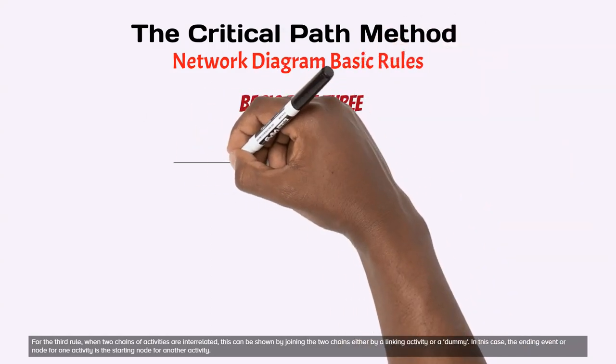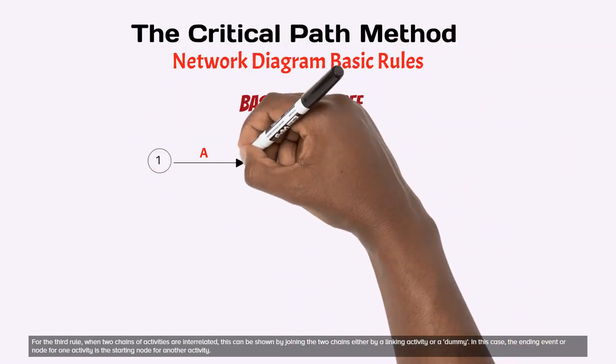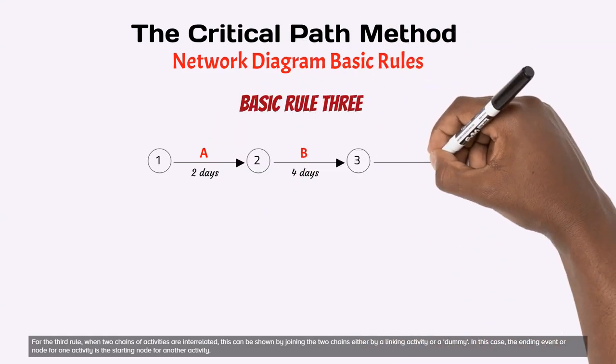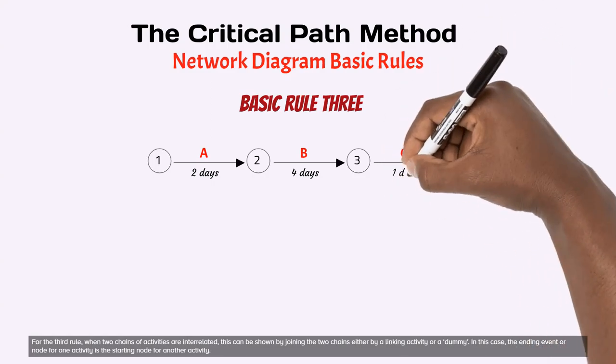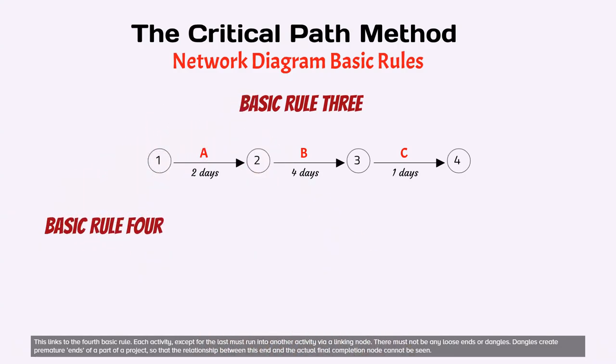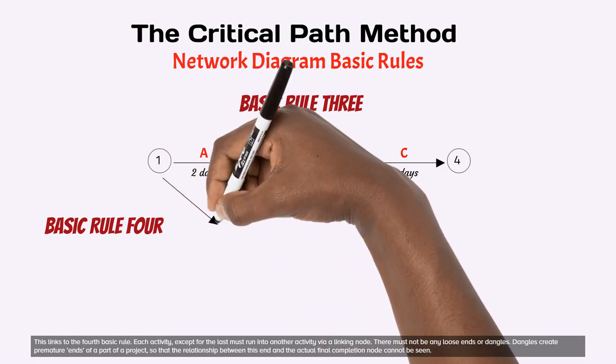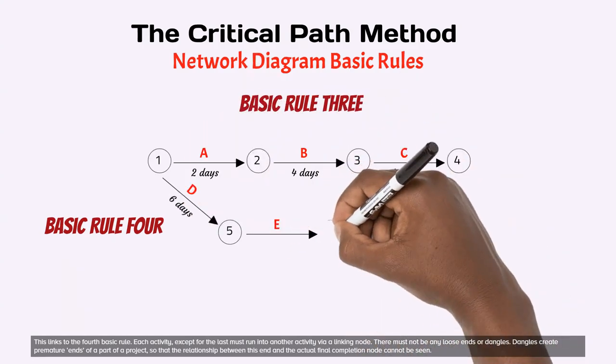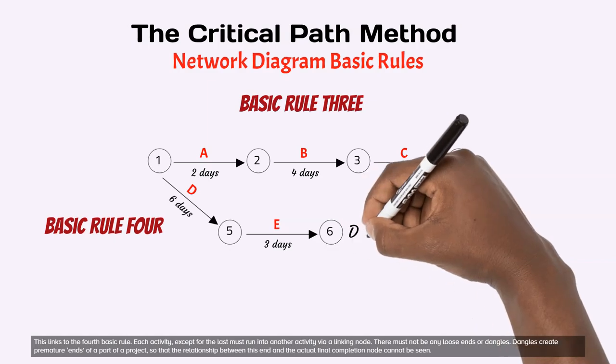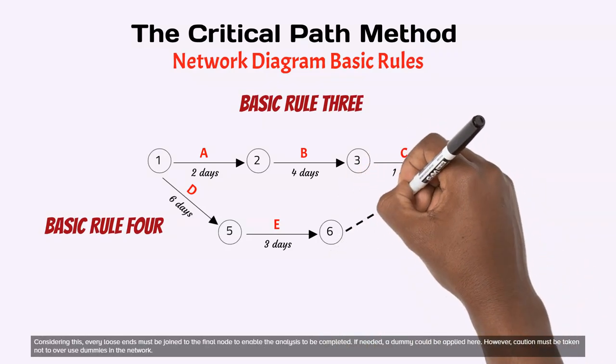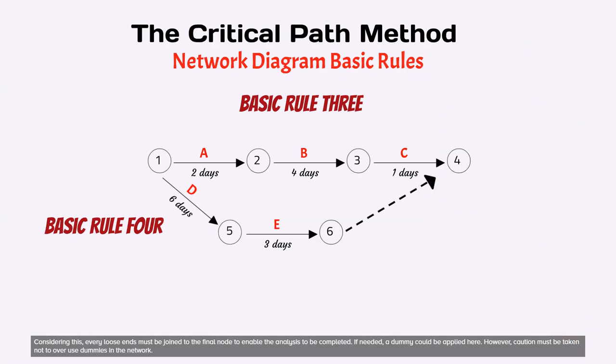For the third rule, when two chains of activities are interrelated, this can be shown by joining the two chains either by a linking activity or a dummy. In this case, the ending event or node for one activity is the starting node for another activity. This links to the fourth basic rule. Each activity, except for the last, must run into another activity via a linking node. There must not be any loose ends or dangles. Dangles create premature ends of a part of a project so that the relationship between this end and the actual final completion node cannot be seen. Considering this, every loose end must be joined to the final node to enable the analysis to be completed. If needed, a dummy could be applied here.